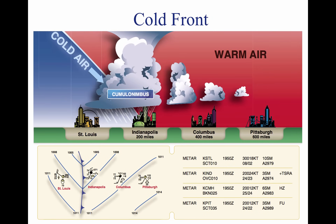A cold front occurs when a mass of cold, dense, and stable air advances and replaces a body of warmer air. Cold fronts move more rapidly than warm fronts, progressing at a rate of 25 to 30 miles per hour. However, extreme cold fronts have been recorded moving at speeds of up to 60 miles per hour. A typical cold front stays close to the ground and acts like a snow plow, sliding under the warm air and forcing the less dense air aloft. The rapidly ascending air causes the temperature to decrease suddenly, forcing the creation of clouds.